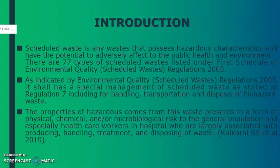According to DOE, related to the Environmental Quality Scheduled Waste Regulation 2005, there are 77 types of scheduled waste listed under the first schedule. They are coded initially with SW, which means scheduled waste. As referred to this regulation, it shall have special management of scheduled waste, as stated at Regulation 7, which covers handling, transportation, and disposal of biohazard waste.